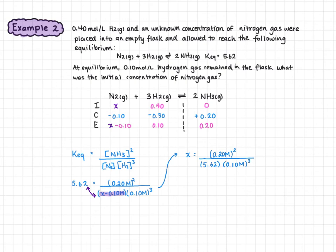To isolate x, we add 0.10 to the other side of the equation, giving us an x value of 7.2 moles per liter.